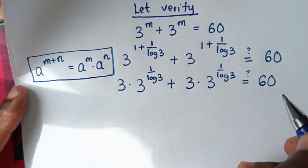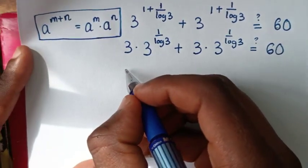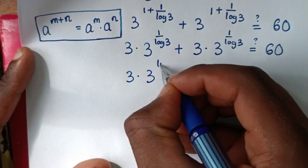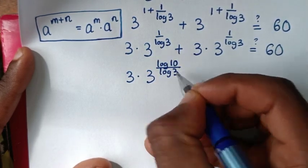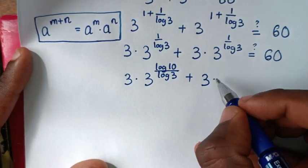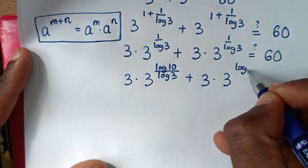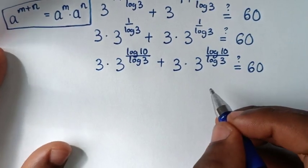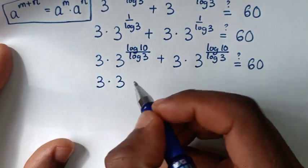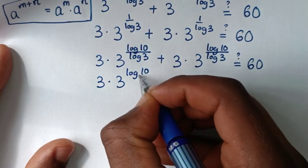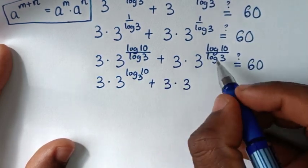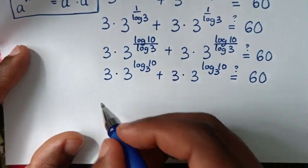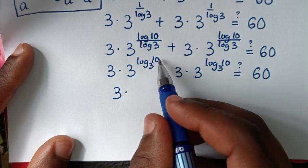It becomes 3 times 3 power of 1 over log of 3, plus 3 times 3 power of 1 over log of 3. Now 1 over log of 3 is the same as log of 10 over log of 3. So we have 3 times 3 power of log 10 over log 3, plus 3 times 3 power of log 10 over log 3. This equals 3 times 3 power of log 10 base 3, plus 3 times 3 power of log 10 base 3.